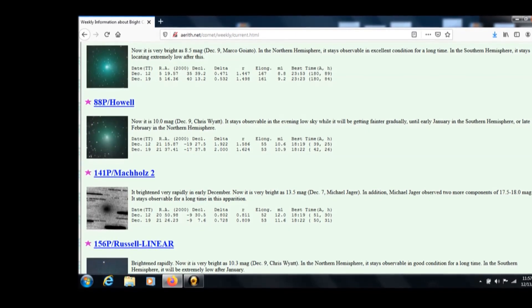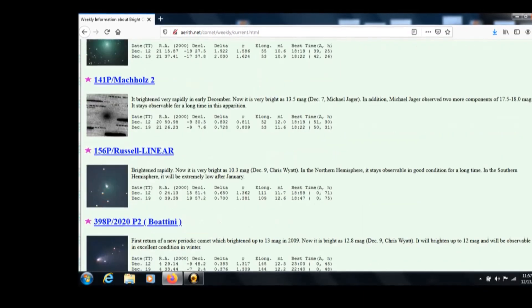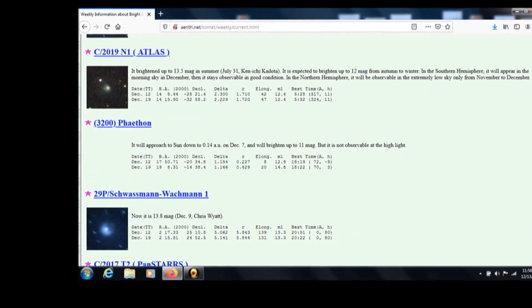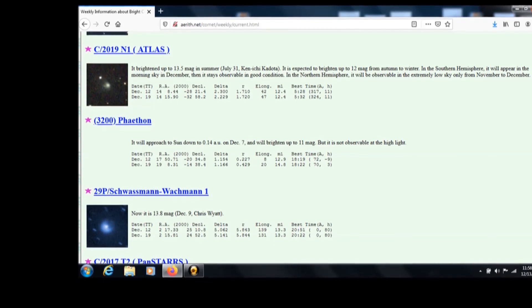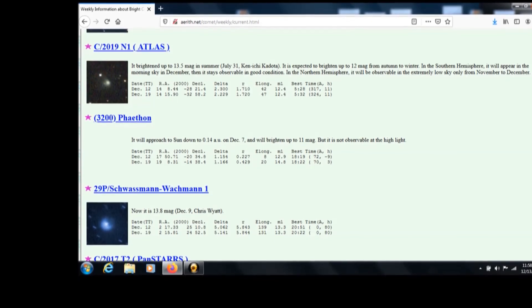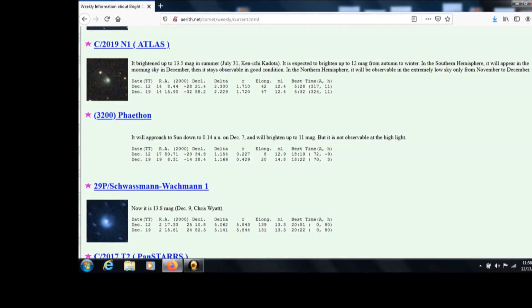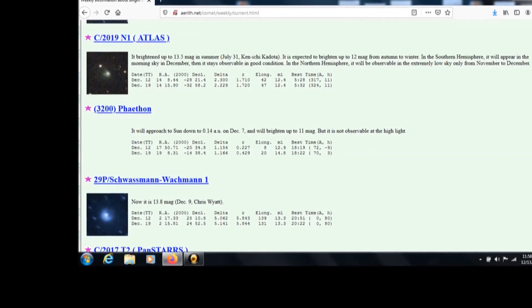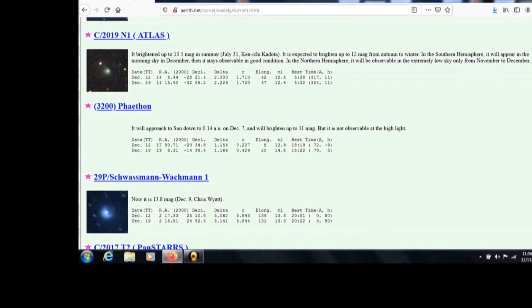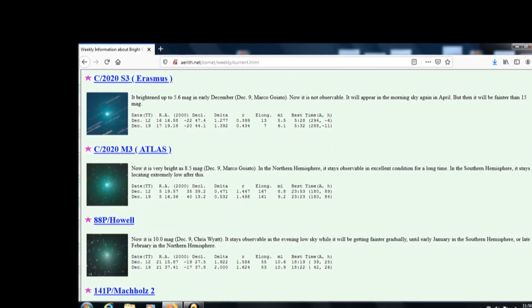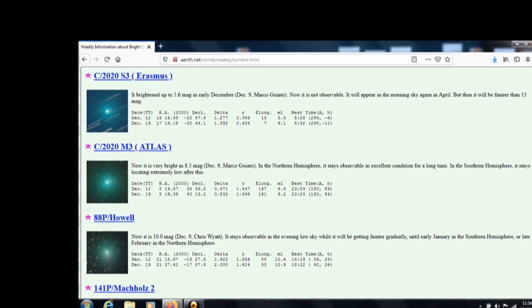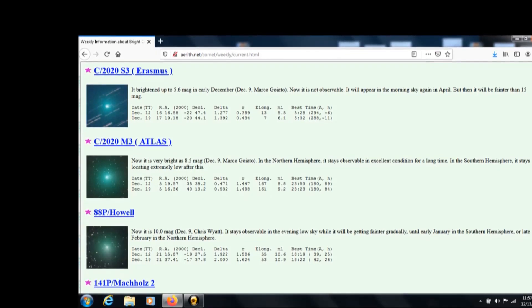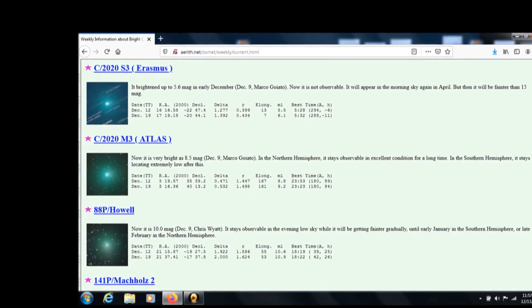It's very bright at 8.5 under binoculars, of course, in the northern hemisphere. 88p Hell is another one, 10 magnitude, recently brightening. As of December 9th visible in the evening low sky, will be getting fainter gradually.